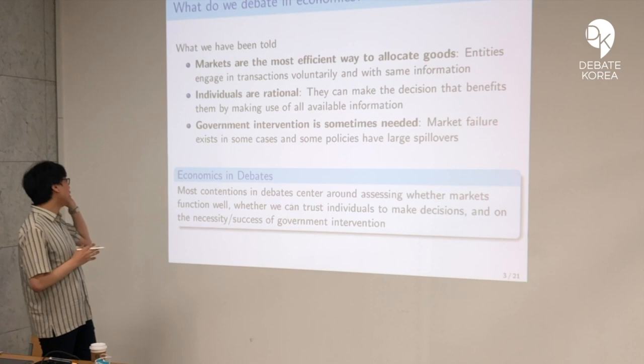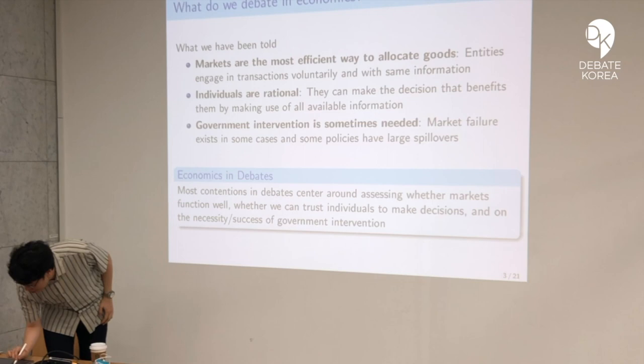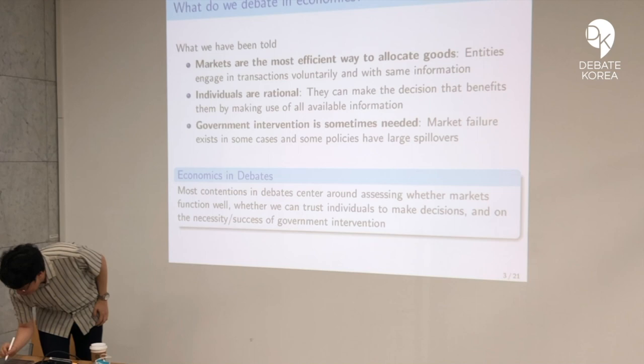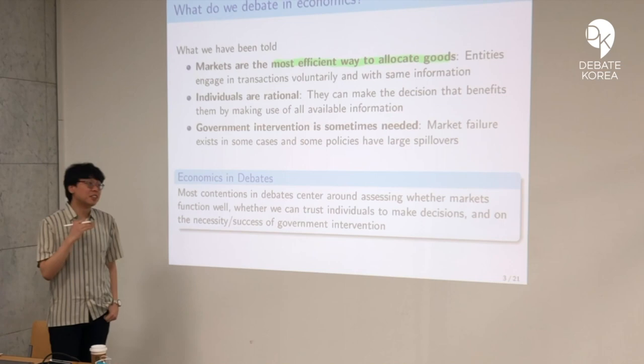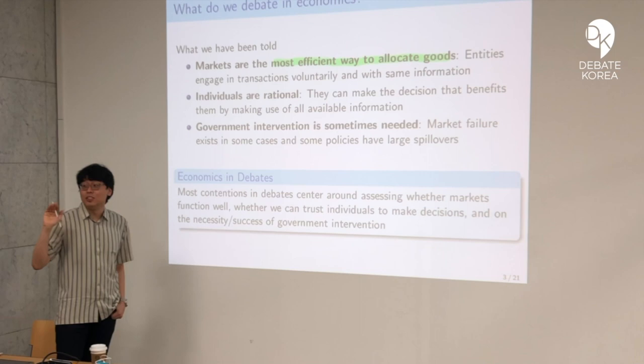The first is markets. Markets are the most efficient way to allocate goods, in the sense that transactions are voluntary and maximize the sum of utilities of individuals involved in those trades. It doesn't say anything about distribution, which is something I'm going to get back to later on.